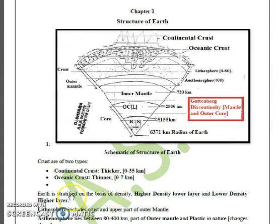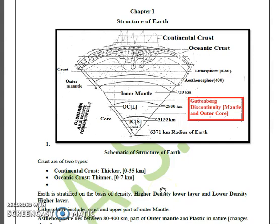If we classify Earth according to stratification, the general rule is that heavier elements or matter will be at the center or bottom, and lighter elements or matter will be in the upper layers. So, higher the density of a material, the deeper it will be; lower the density, the higher it will be.